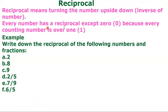Every number has a reciprocal except zero. Remember, every whole number is over one. That is why two over one is the same as two, ten over one is the same as ten, twenty over one is the same as twenty. So, example: write down the reciprocal of the following numbers and fractions. We are going to solve and write the reciprocal of these numbers.